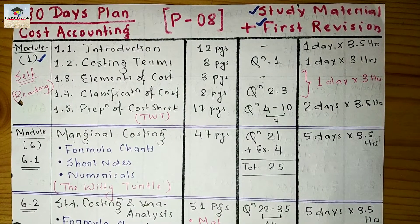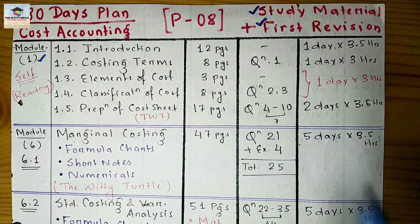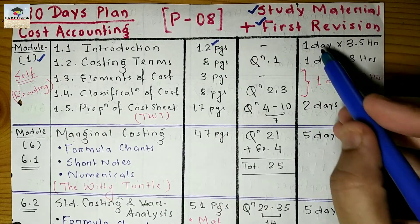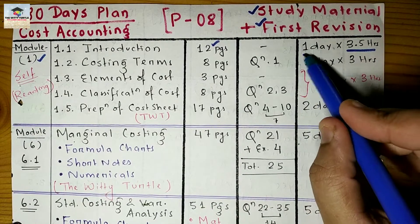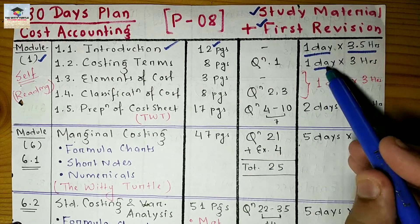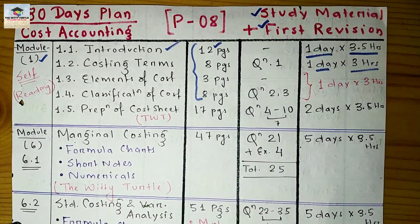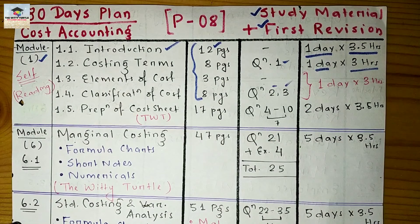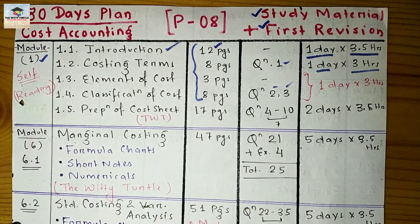The first sub-module is 1.1, the introduction part — 12 pages, and it will take hardly one day, about 3.5 hours. The second chapter is costing terminology, also very easy — one day of three hours and you'll be done. All four of these sub-modules are entirely theory, with hardly three numerical questions across them.